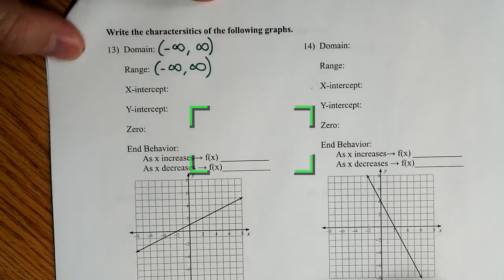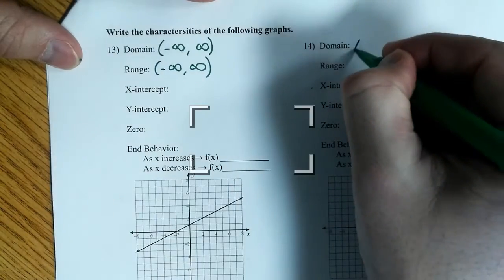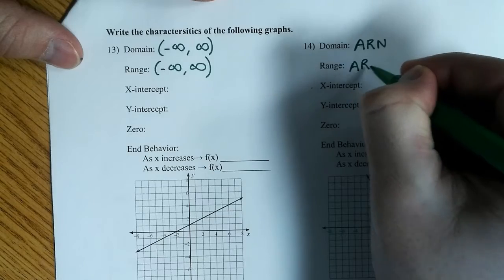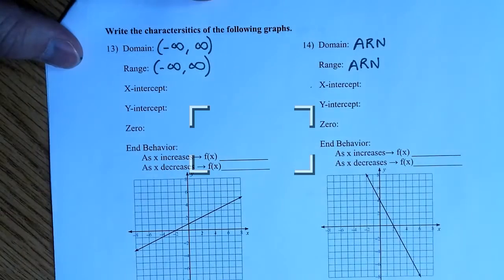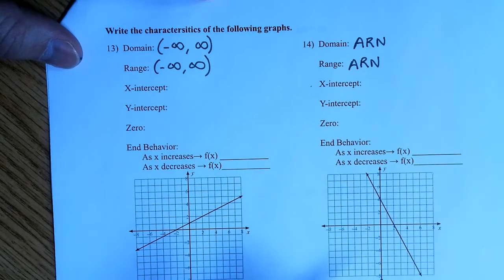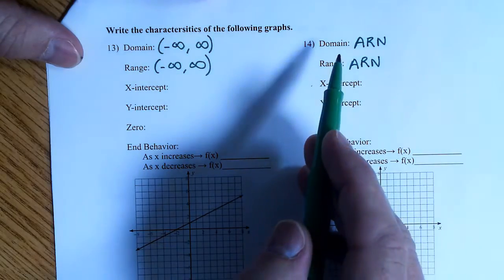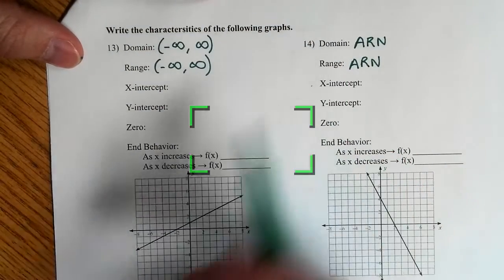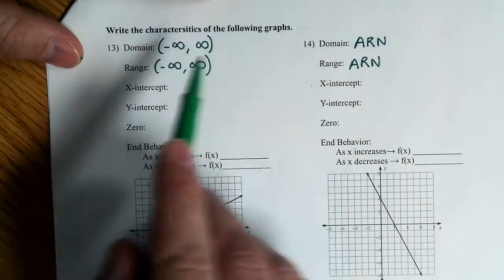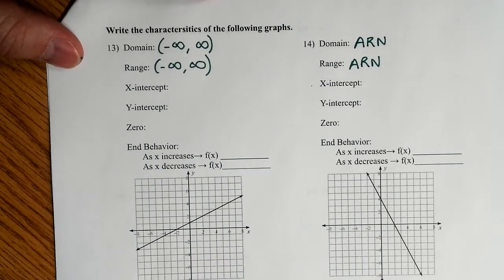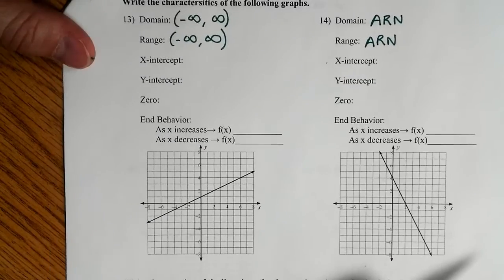Now another way of writing this is you can put this down: ARN. Does everybody know what that means? It means all real numbers. I think Tim helped us out with that yesterday. So ARN, all real numbers. You can put down all real numbers if you want, or just write down ARN. I'll accept either of these on the quiz on Monday.